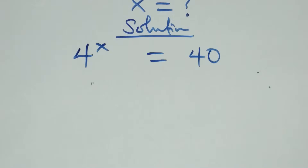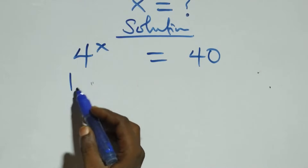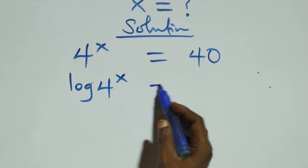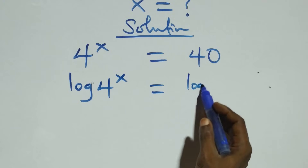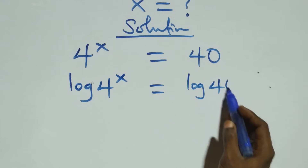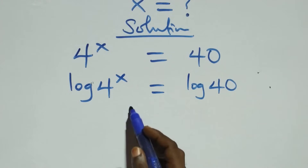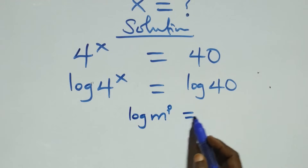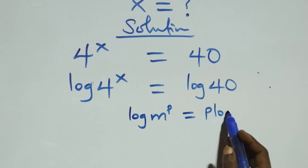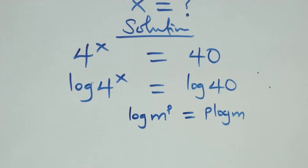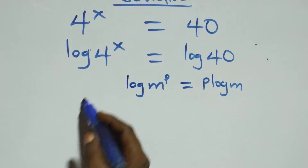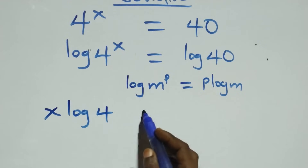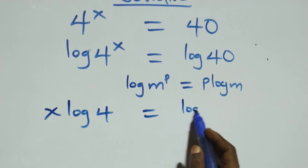We take the log on both sides, so we have log of 4 raised to the power x equals log 40. We apply the power rule of logarithm: log of m raised to power p equals p times log m. So this becomes x times log 4 equals log 40.